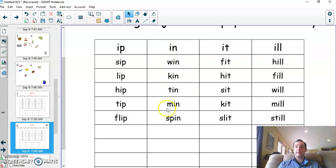Try and say these with me. I-n. Win, in, kin, tin, min, spin. I-t ending. Fit, hit, sit, kit, slit.